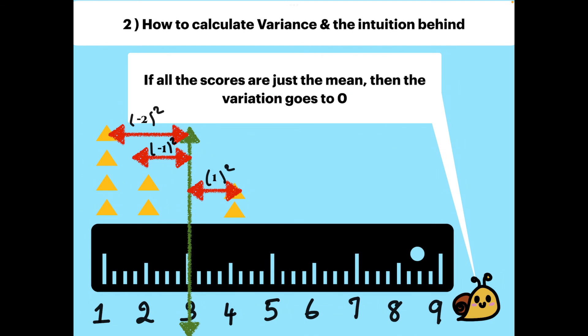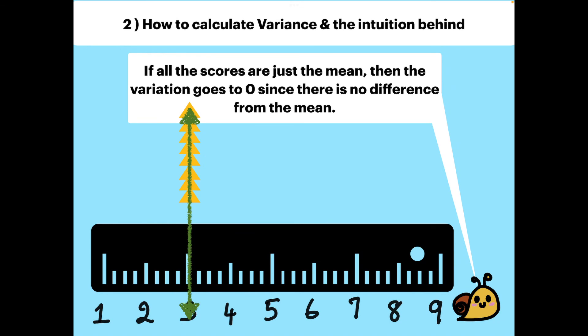If all the scores are just the mean, then the variation goes to 0. Since there is no difference from the mean, there is no deviation present here.